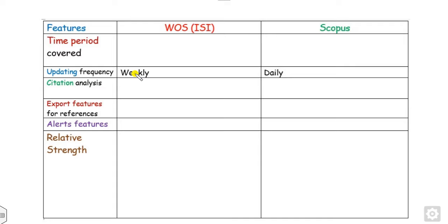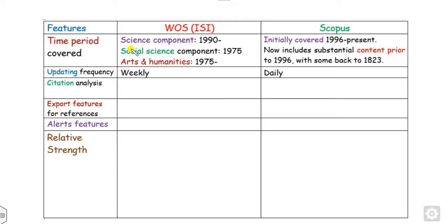Also, the time period covered: the science component in Web of Science is covered since 1990, social science component from 1975 onwards, and arts and humanities from 1975. While Scopus was initially covered from 1996, but now it includes content going back to 1823.